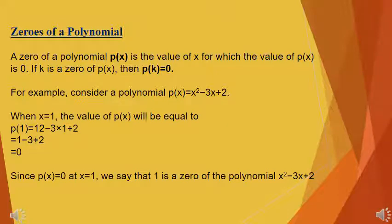In graphical representation, we find the number of zeros using the graph. The zeros of a polynomial are the values where the whole value of the polynomial is equal to zero. For example, for the polynomial P(x) = x squared minus 3x plus 2, when we put the value of x that makes the polynomial equal to zero, that value is a zero of the polynomial.